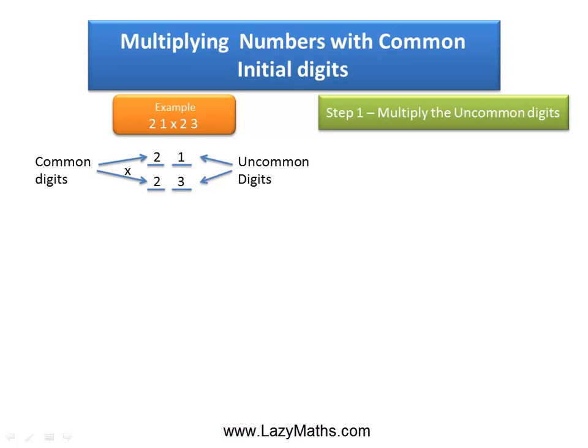So we can apply this method. The first step is to multiply these uncommon digits, so we multiply 1 and 3 together and we get a 3.